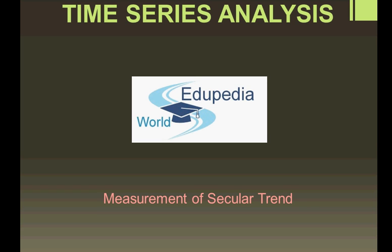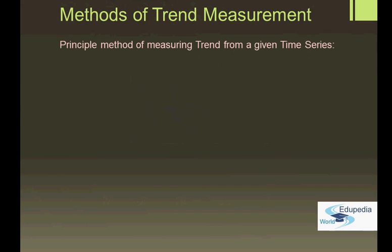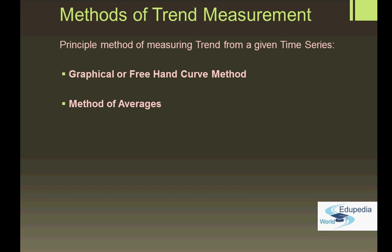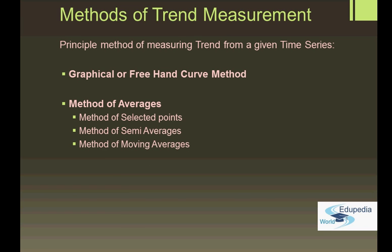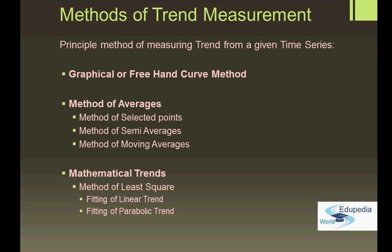To begin with, we'll start with the measurement of secular trend. We have different methods of measuring trend. The simplest or easiest method is the graphical or freehand curve method. Then we have the method of averages, under which we have the method of selected points, the method of semi-averages, and the method of moving averages. Further, we have the mathematical trend, under which we have the method of least squares, which can fit linear, parabolic, or exponential trends.